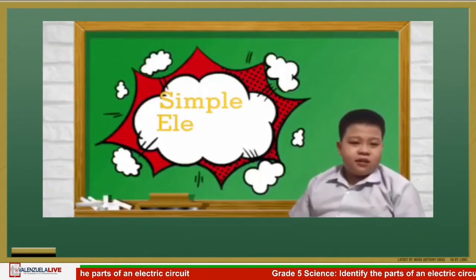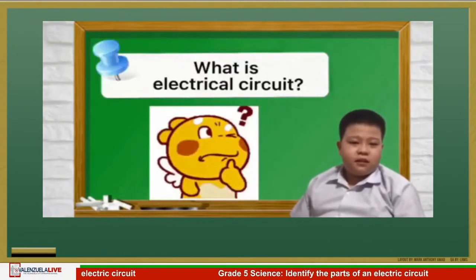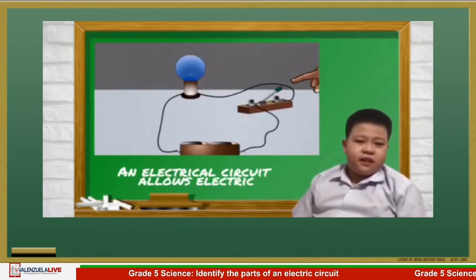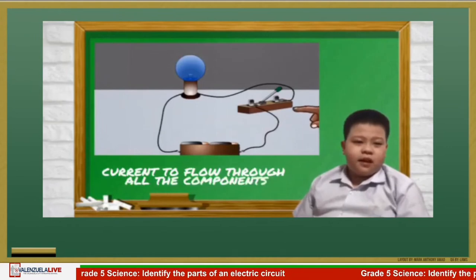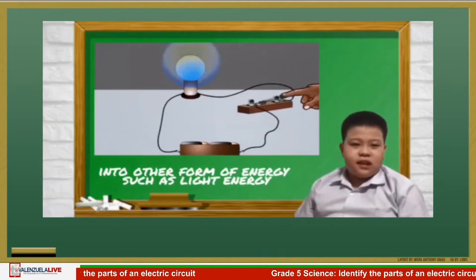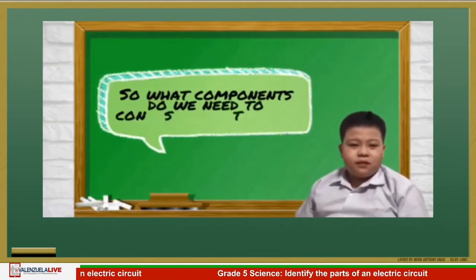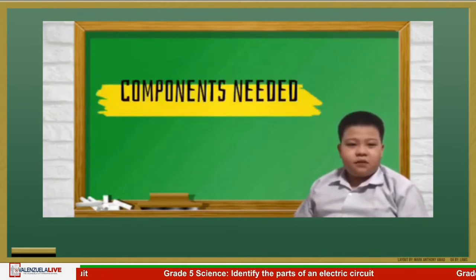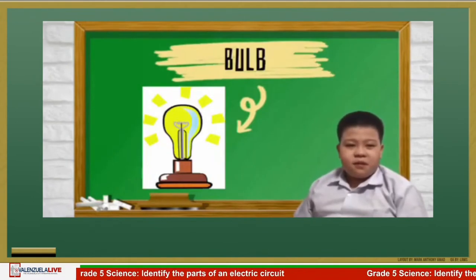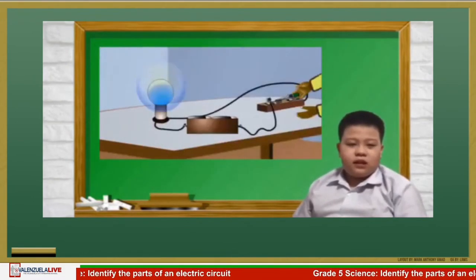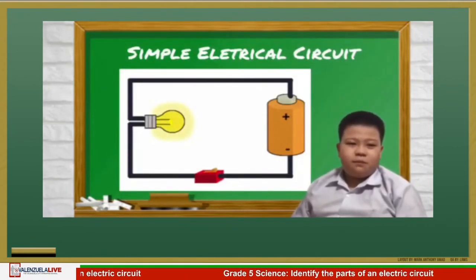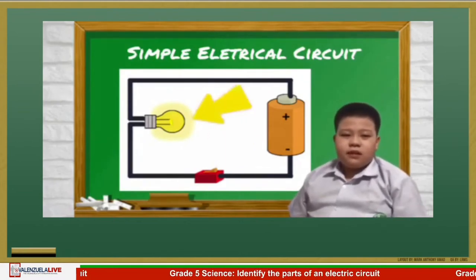An electrical circuit allows electric current to flow through all the components, and electricity is converted into other forms of energy, such as light energy. The components we need to construct the circuit are battery, connecting wires, switch, and the bulb, which is the load to convert electrical energy to light. So, a simple electrical circuit consists of a power source, connecting wires, switch, and a load.